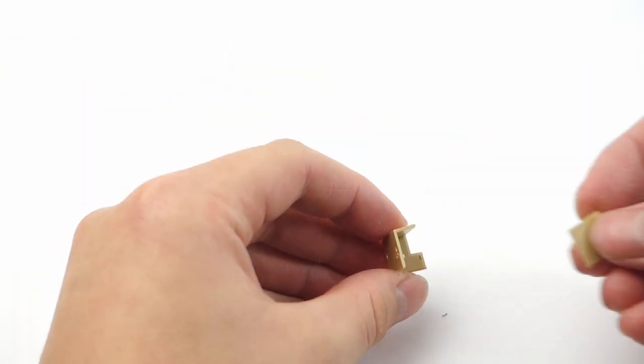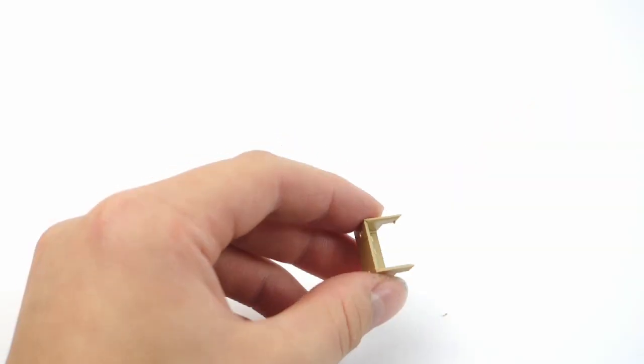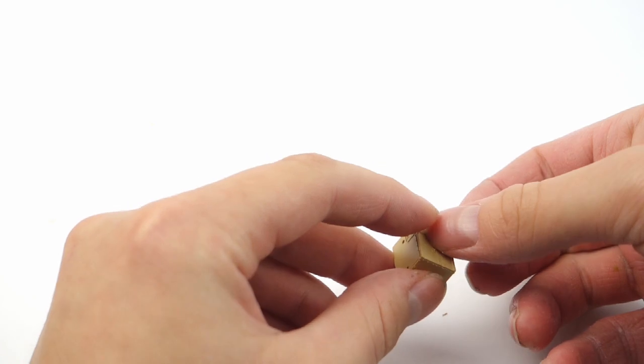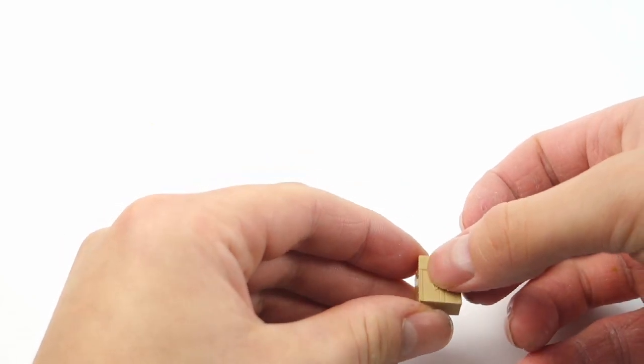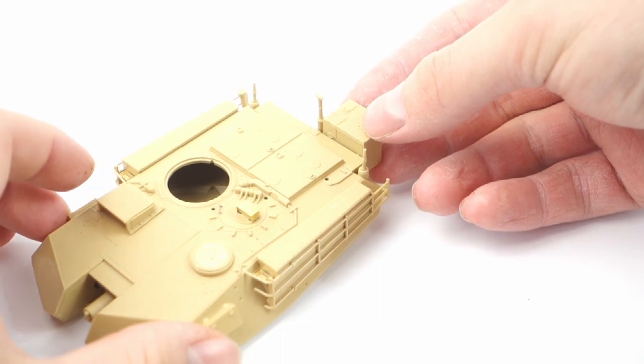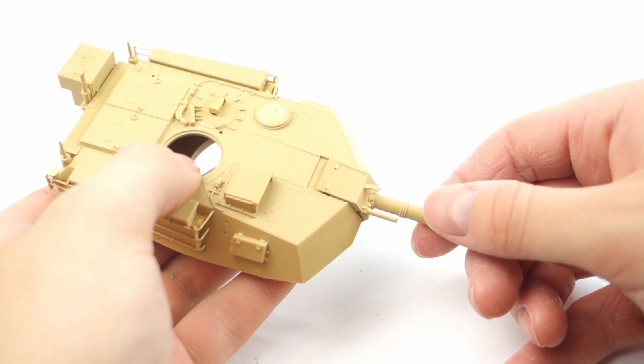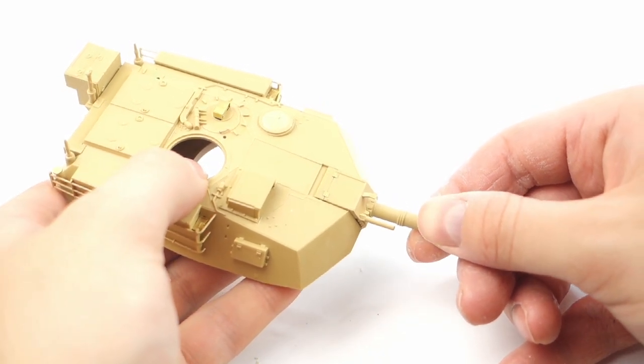This weird box that goes on the back of the Abrams turret is an auxiliary power unit. On M1A1 they were originally mounted on the back of the hull, but with later modifications they were moved onto the back of the turret, so it's correct for me. It comes together from five pieces and is just packed with beautiful details. At this point, I also glued the main armament to the turret.